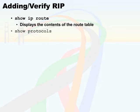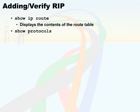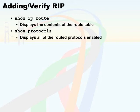We can also use the show protocols command, which will display all of the routed protocols such as IP and IPX that have been turned on on the router and are ready to be routed. It also displays any addresses assigned to each interface — IP addresses, IPX addresses, or otherwise.